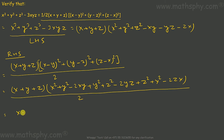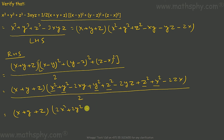So this will be x plus y plus z. Collecting like terms: x squared plus x squared gives 2x squared, y squared plus y squared gives 2y squared, and z squared plus z squared gives 2z squared. The remaining terms are minus 2xy minus 2yz minus 2zx.